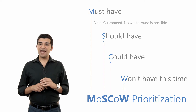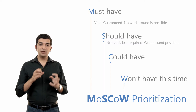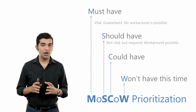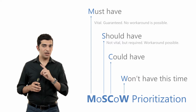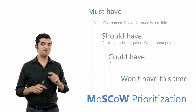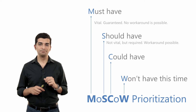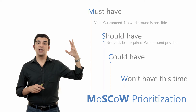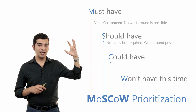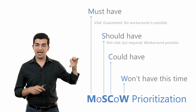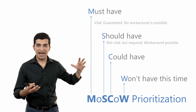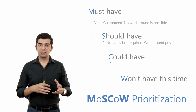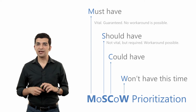Then we have the should-haves. If we don't have a should-have in our product, we will have a problem — but we can find a workaround for that problem. That's the difference between a must-have and a should-have: we cannot find a workaround for the problem caused by lacking a must-have, but we can for a should-have. Maybe we can do it manually, or use another piece of software in parallel, or something else.